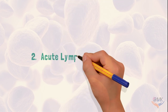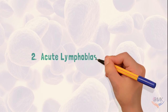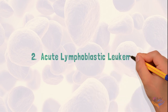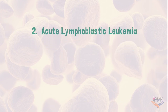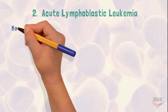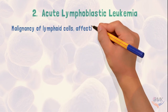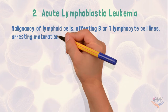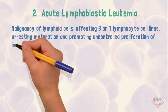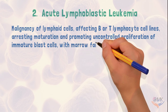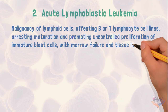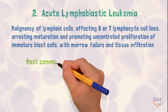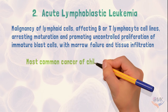The second type of leukemia is acute lymphoblastic leukemia. It is defined as malignancy of lymphoid cells affecting B or T lymphocyte cell lines, arresting maturation and promoting uncontrolled proliferation of immature blast cells with marrow failure and tissue infiltration. It is the most common cancer of childhood.